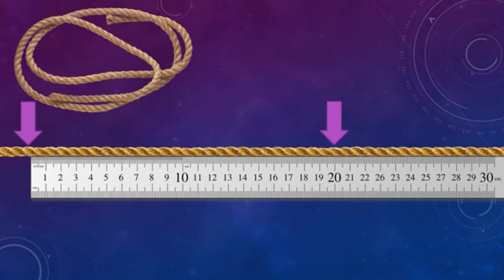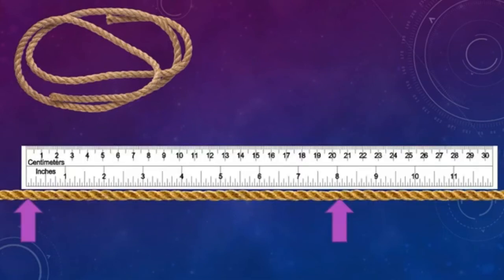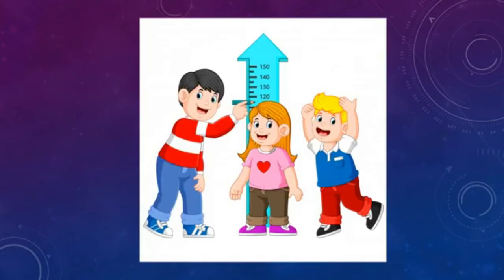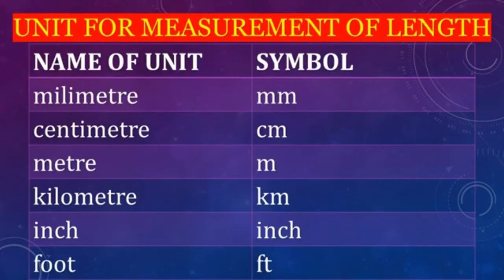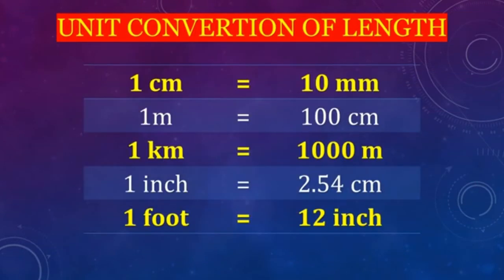Another example: the distance between two points of this rope is 20 centimeters, or 8 inches when measured in inches. In this picture we can clearly see how a doctor takes the height of a child using a measuring scale. I will provide a table of unit conversions for length — please pause the video, take your copy, and write down the unit conversions.